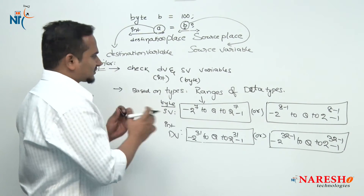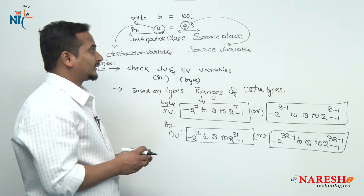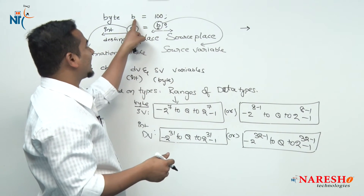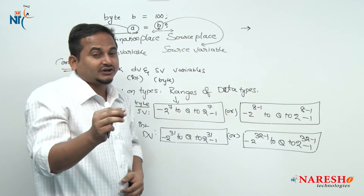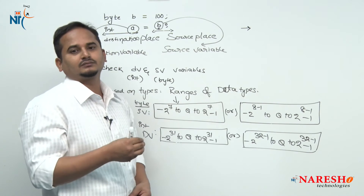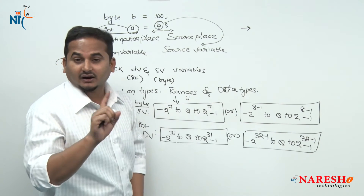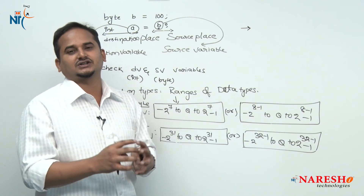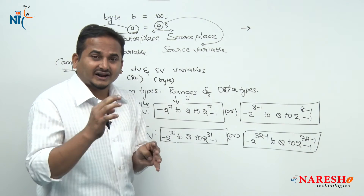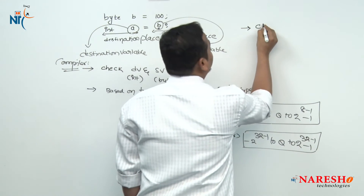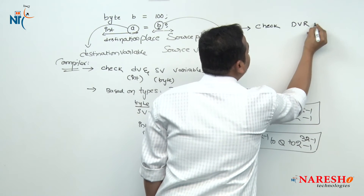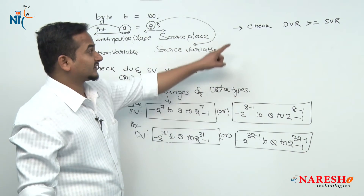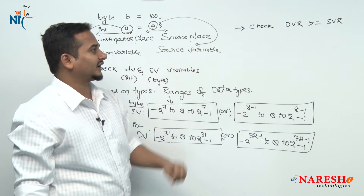The second step is completed, but the third step is very important. In the last video I talked about how when assigning a value directly to a variable, the compiler concentrates on the source value. But this time the compiler does not concentrate on the source value — the compiler concentrates on the ranges. The compiler checks whether the destination variable range is greater than or equal to the source variable range.